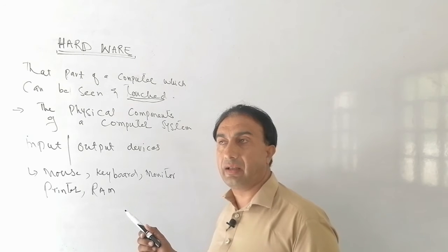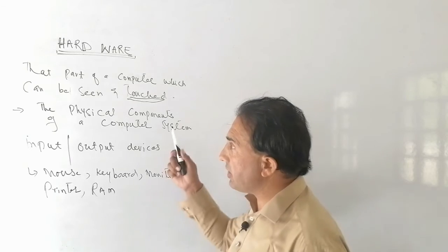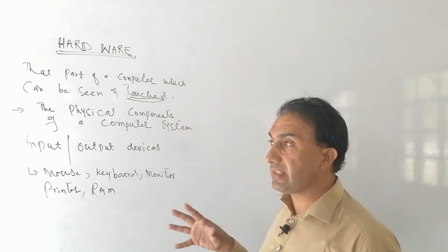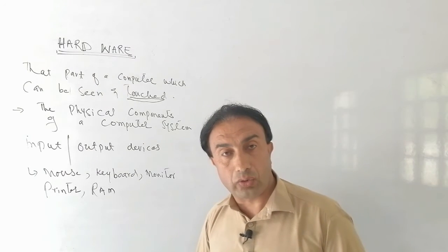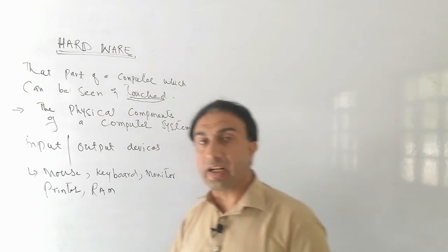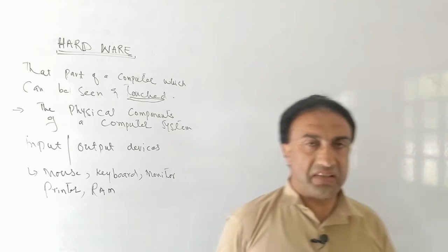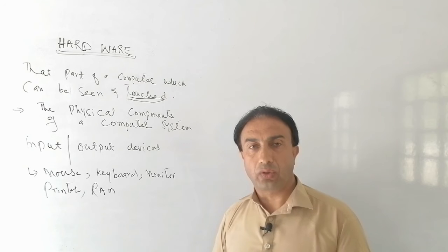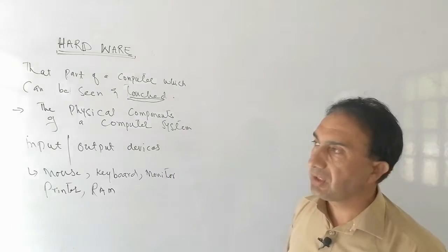Those parts which can be touched are called hardware. Examples include plotters, printers, motherboard, and processor — these are all hardware devices. Hardware consists of physical equipment. To run hardware, software is needed. Hardware without software is nothing; when software is removed from a computer, hardware loses all its functionality.